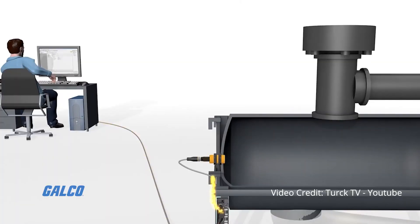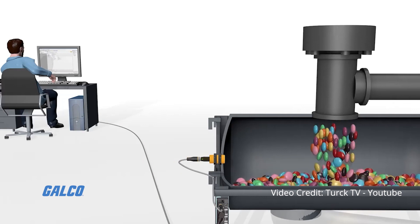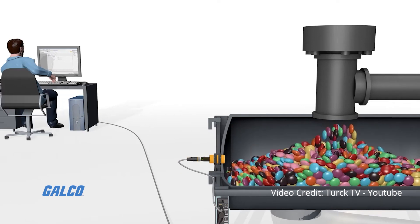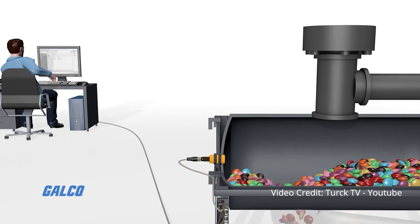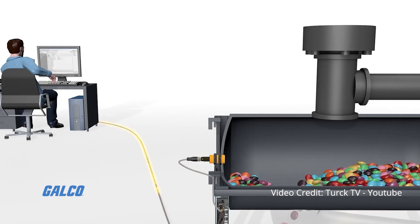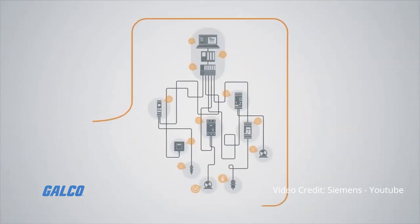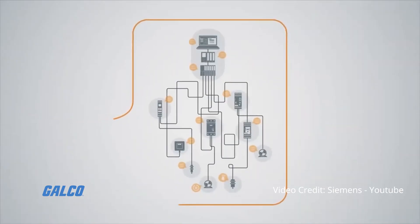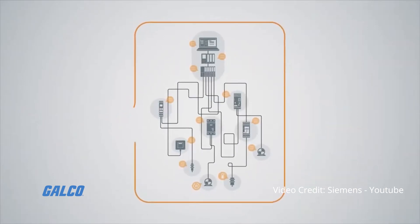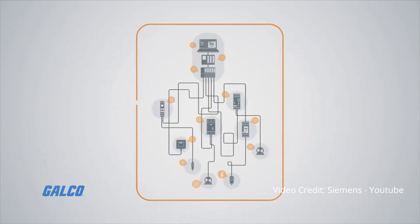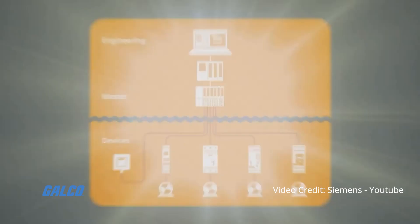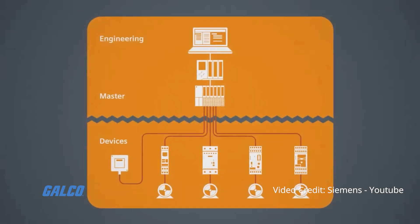IO-Link is bi-directional, meaning that it works two ways and works over a short distance. Acting as a master device, IO-Link connects to field devices such as actuators and sensors, and then communicates to a controller, usually a programmable logic control.